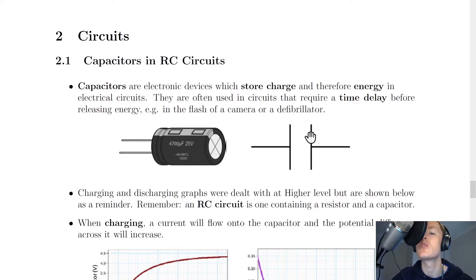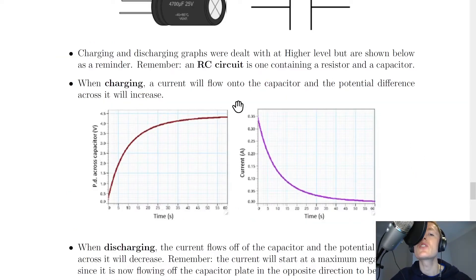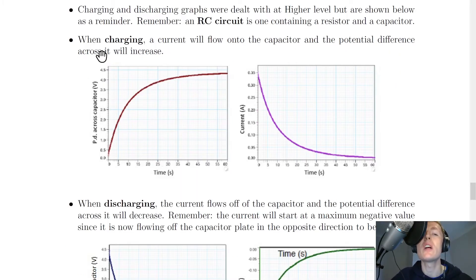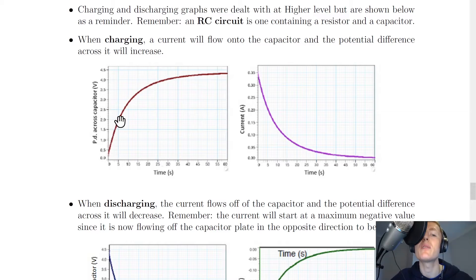The circuit diagram shows the two metal plates. Charging and discharging graphs were dealt with at Higher level but are shown here as a reminder. An RC circuit is simply one containing a resistor and a capacitor — R being the symbol for resistance and C for capacitance. For a charging capacitor, current flows onto the capacitor plates and the potential difference across it will increase up to a maximum over time, while the current in the circuit decreases over time.